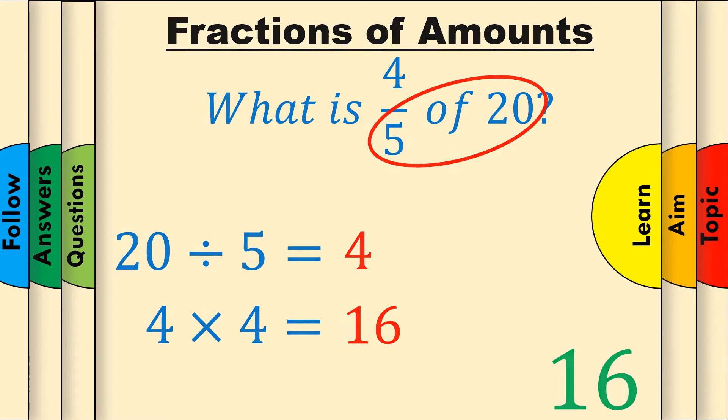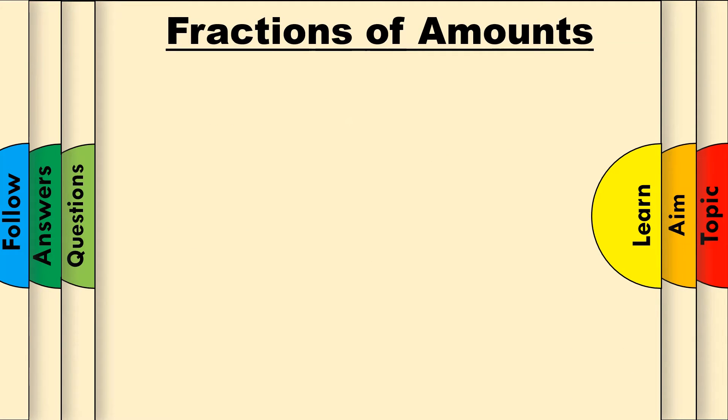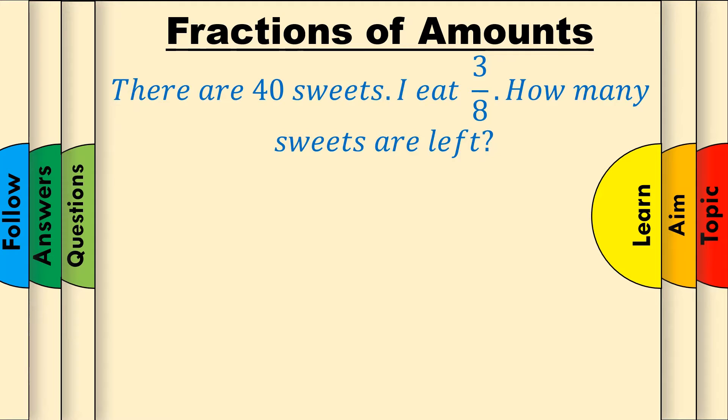A final example before we move on to some practice questions. There are 40 sweets, I eat 3 over 8. How many sweets are left? To solve this, it's best to work out 3 over 8 of 40, and then subtract this from the total to work out what's left.